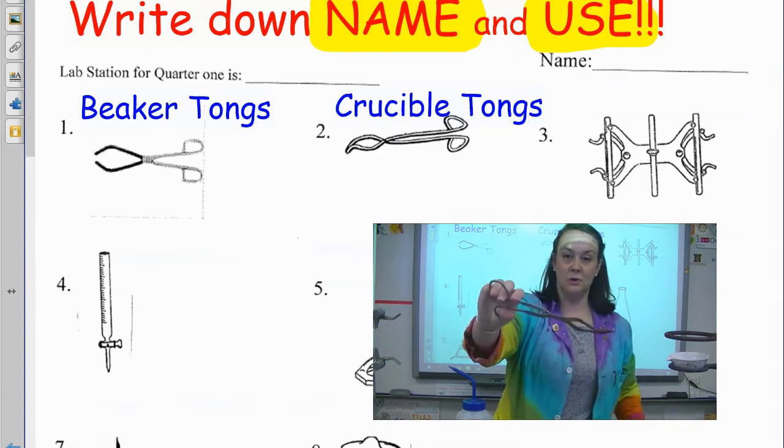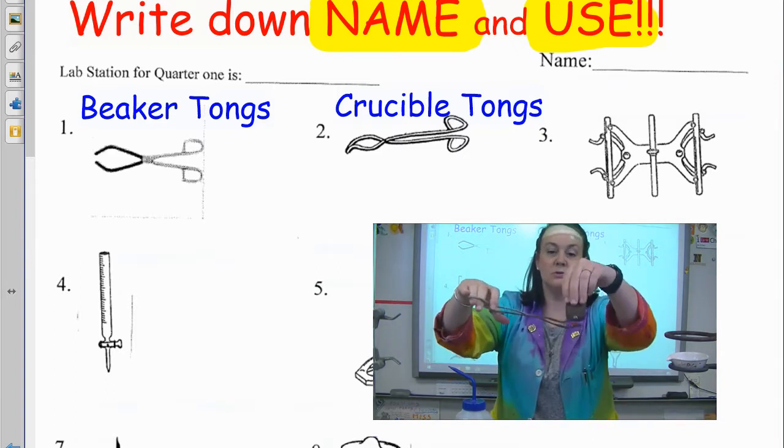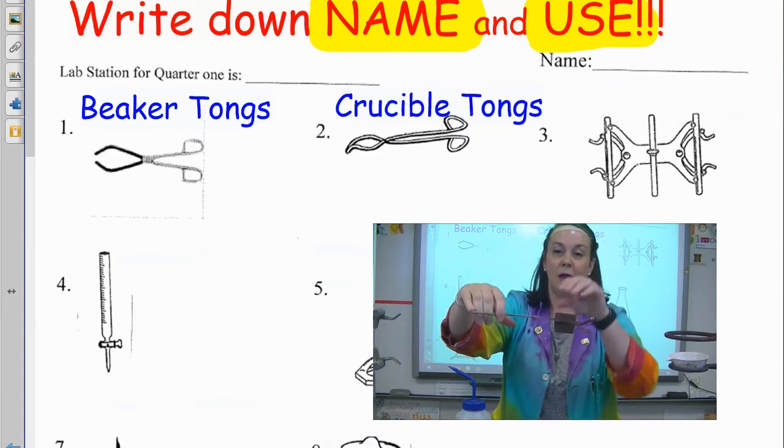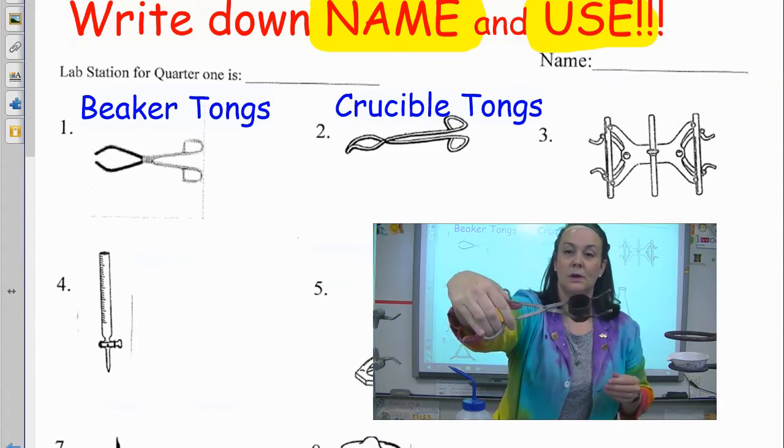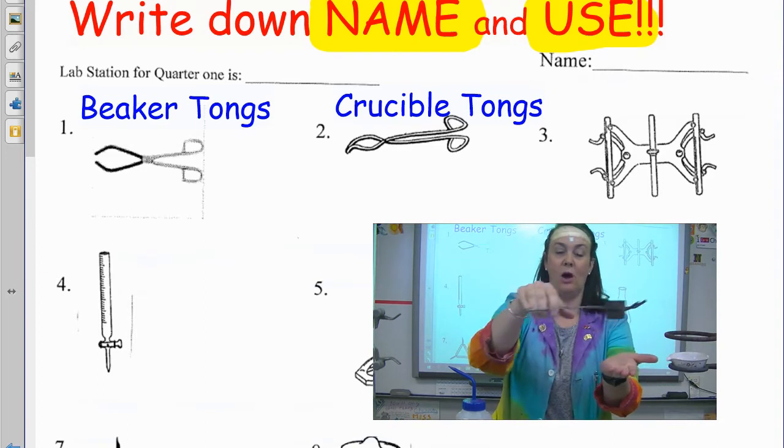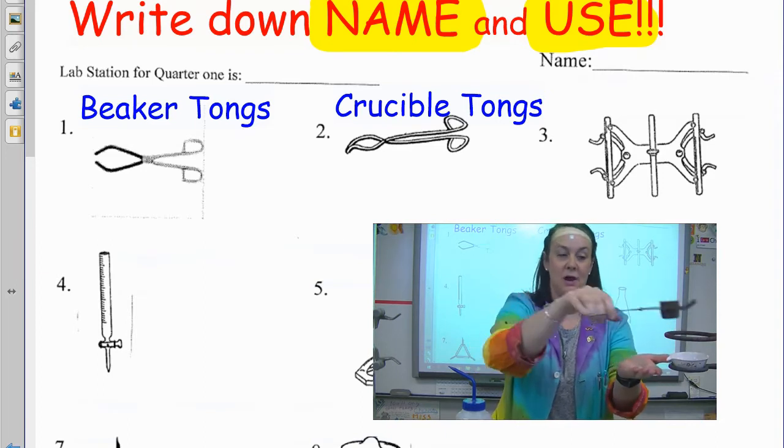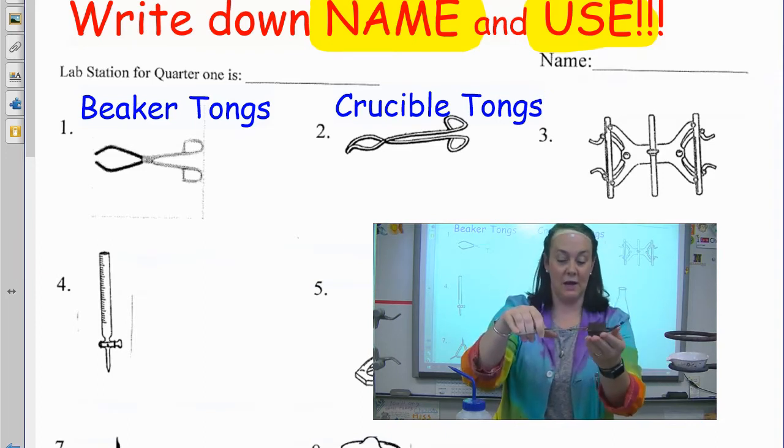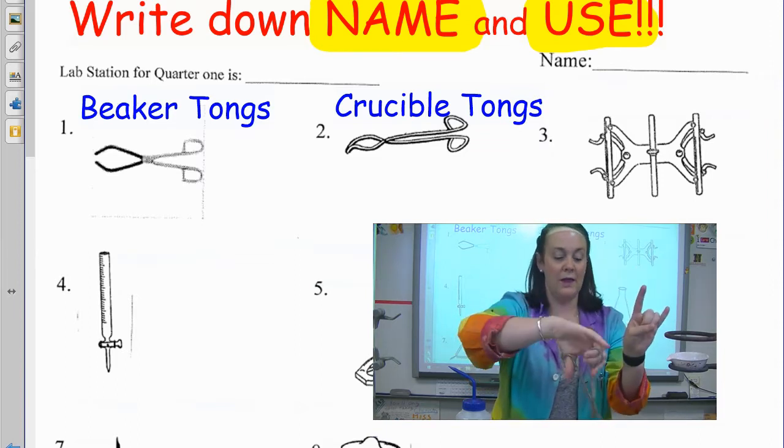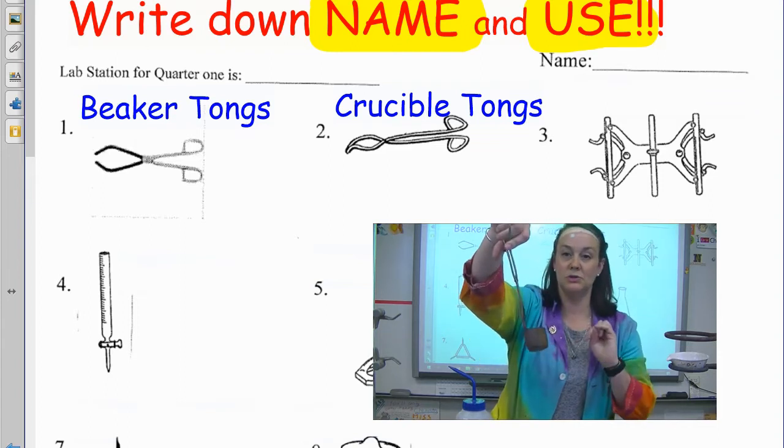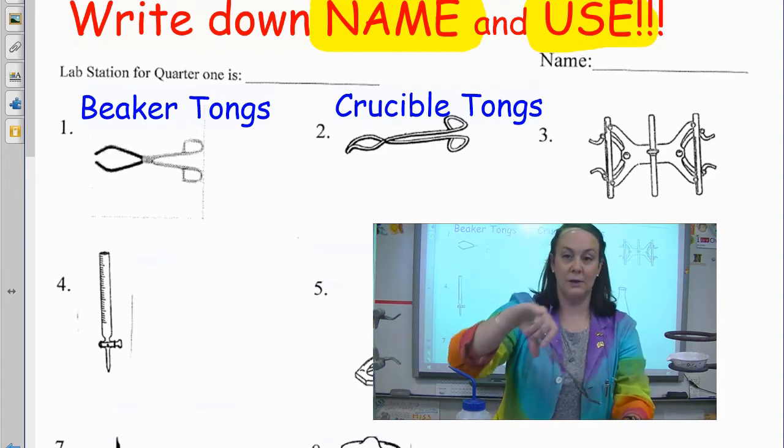And what crucibles can do, crucibles will do, is crucible tongs, excuse me, they hold hot crucibles. So again, if you're taking a crucible off of the hot standard apparatus, you have a way to take it. The way that you remember to use crucible tongs is you always hook the little horns up. And they also can be used as little pinchers if you need to, to pick things up.